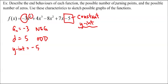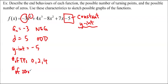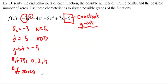The possible number of turning points: because this is an odd degree of 5, the number of turning points could be 0, 2, or 4 — any even number up to n minus 1, which is 4. The number of zeros: because it is an odd polynomial going from top to bottom, it has to cross the x-axis at least once, so at least one zero and up to five zeros — 1, 2, 3, 4, or 5.